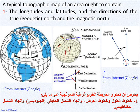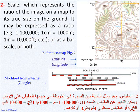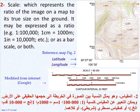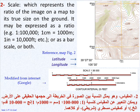A typical topographic map of an area ought to contain: one, the longitudes and latitudes, and the directions of the true — that is to say geodetic — north and the magnetic north. Two, scale, which represents the ratio of the image on a map to its true size on the ground. It may be expressed as a ratio, for example 1 to 100,000, 1 centimeter equals 1,000 meters, 1 inch equals 10,000 feet, etc., or as a bar scale or both.